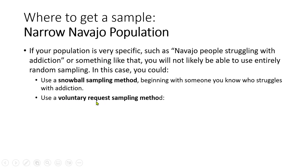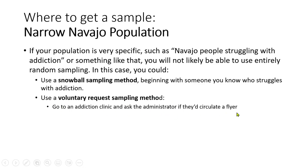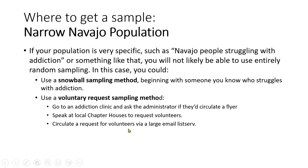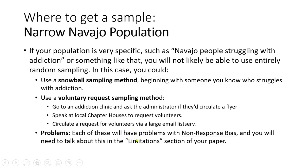You could also use a voluntary request sampling method — also non-random. You might go to an addiction clinic and ask the administrator to circulate a flyer, speak at local chapter houses to request volunteers, or circulate a request via a large email list. The problem is non-response bias: those who decline to participate systematically differ from those who participate. You'd have to write about that in the limitations section of your paper.